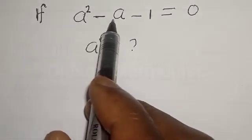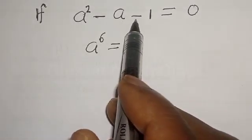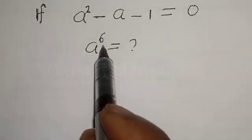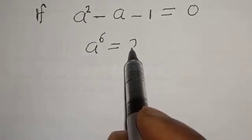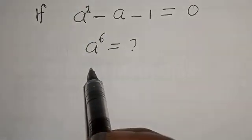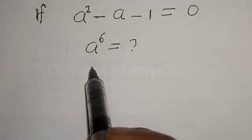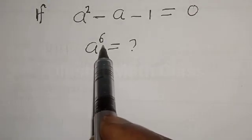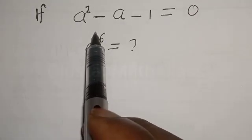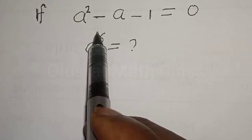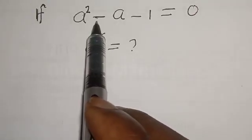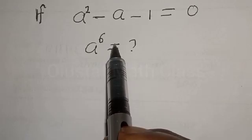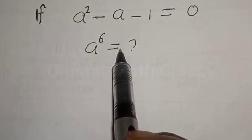If a squared minus a minus 1 is equal to 0, a raised to power 6 is equal to what? Hi everyone, welcome to my class. In today's class, we want to look at how we can find the value of a raised to power 6 from this given equation. We said if a squared minus a minus 1 is equal to 0, then a raised to power 6 is equal to what?